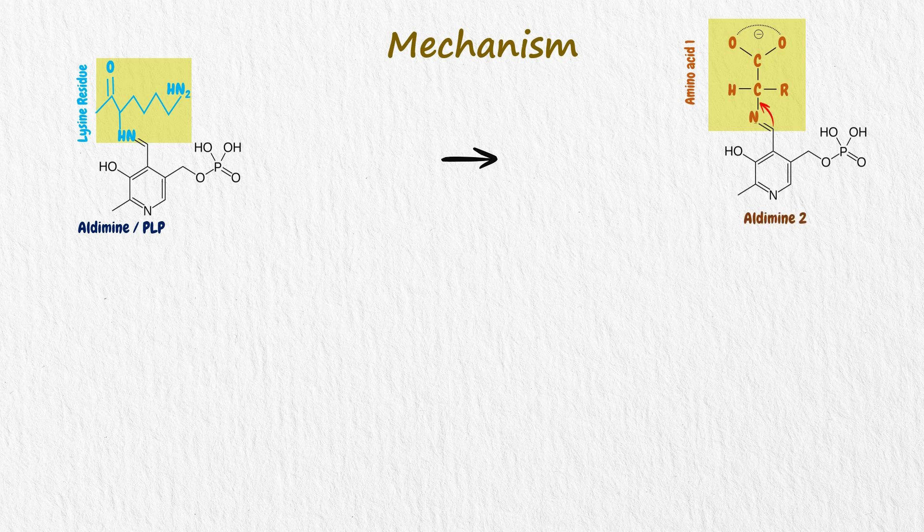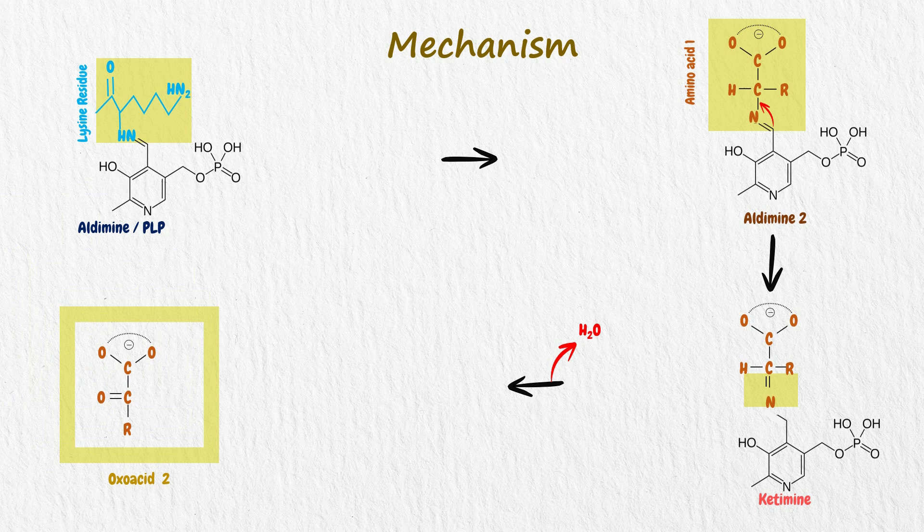The double bond is then shifted by isomerization. The ketimine is formed, which is then hydrolyzed to yield the 2-oxoacid and pyridoxamine phosphate.